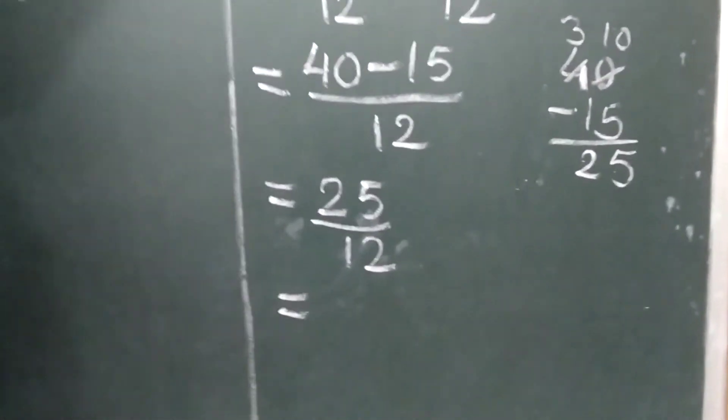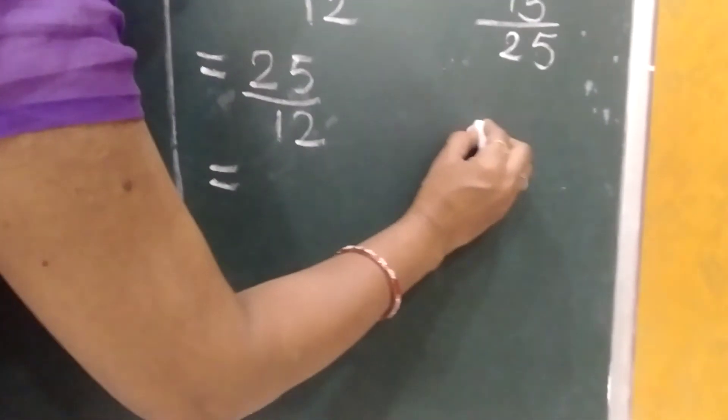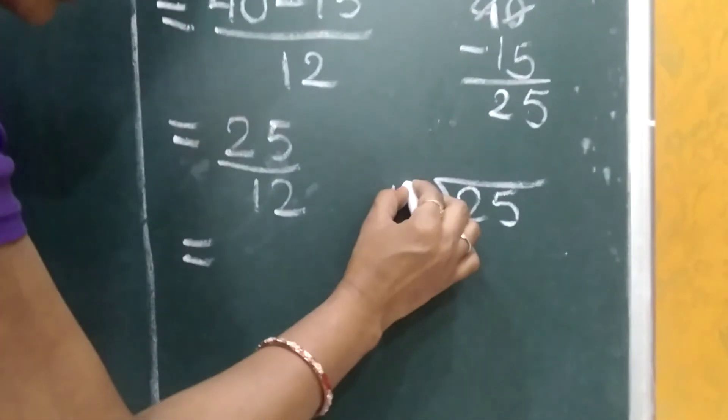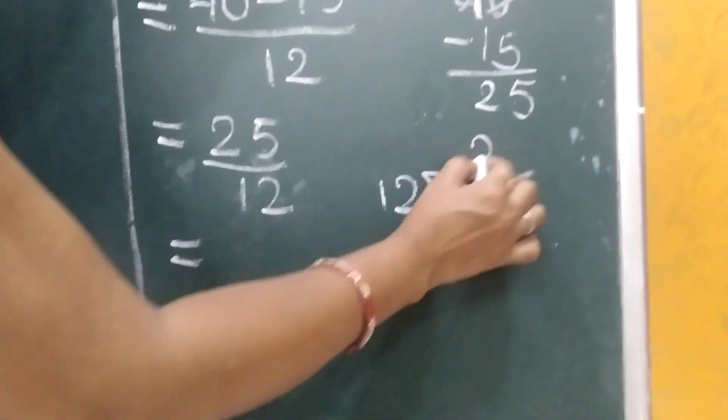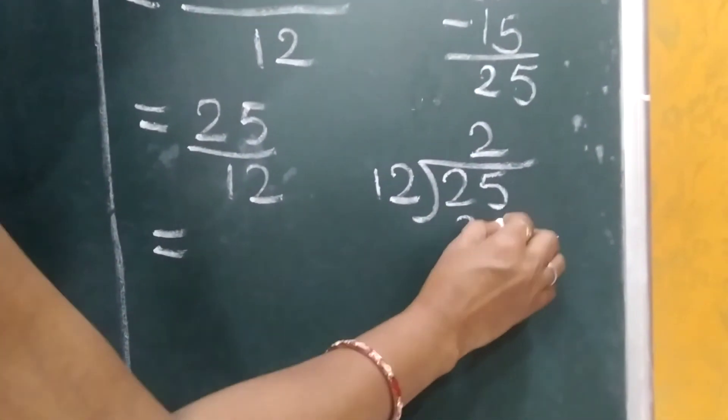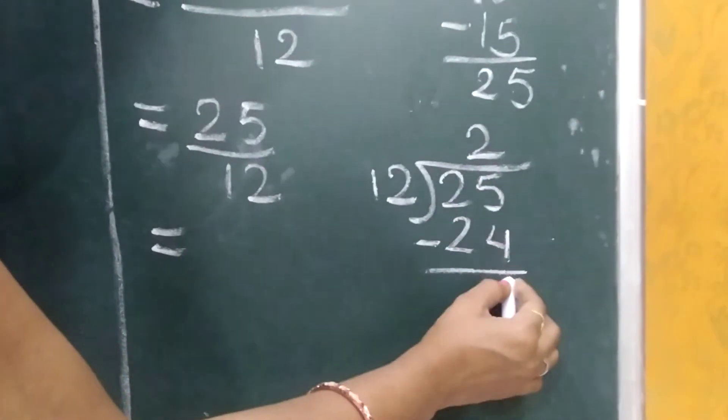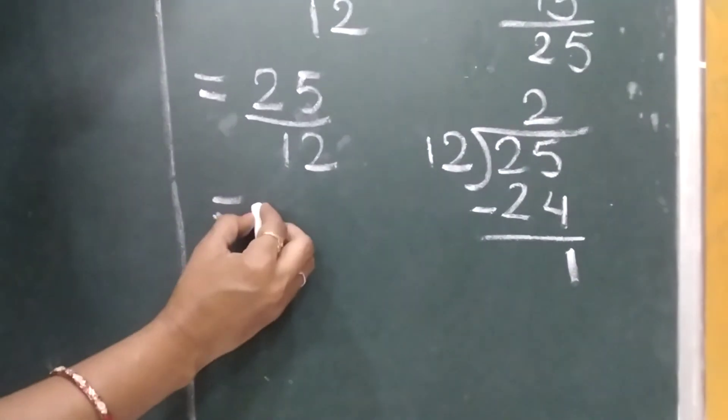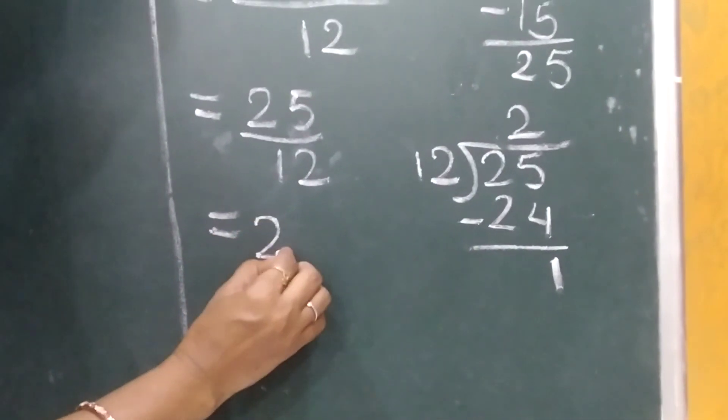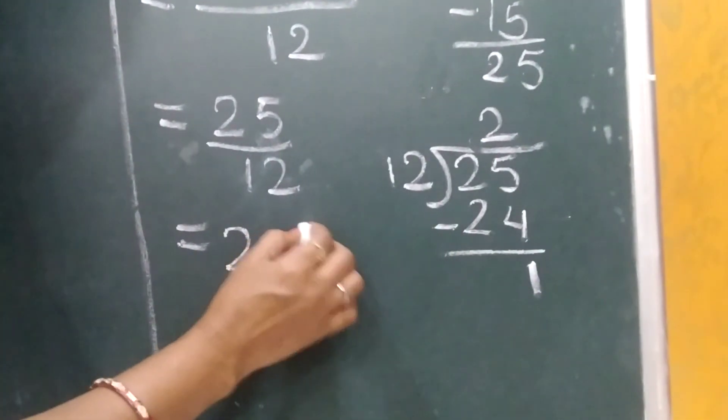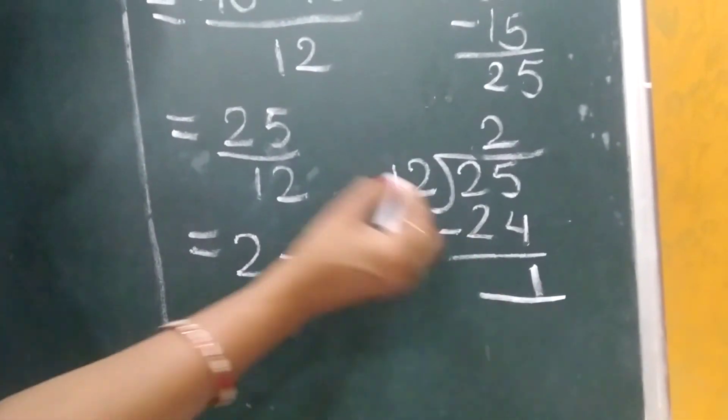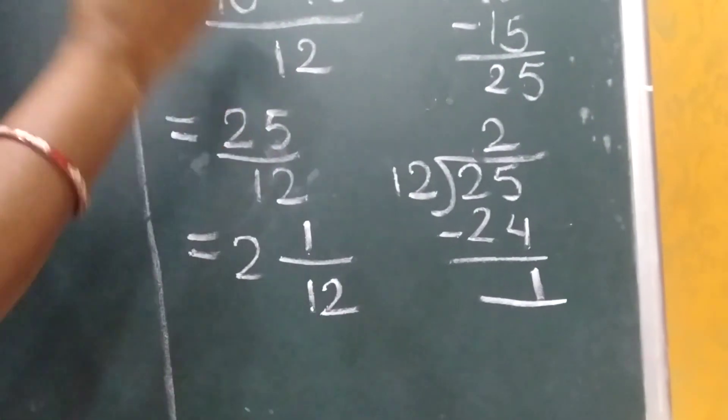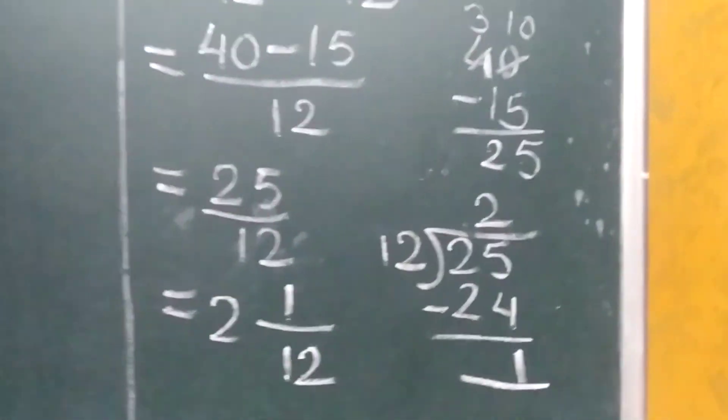And we have to convert this into mixed number. For this we will divide the numerator 25 by the denominator 12. So 12 twos are 24, we get the remainder 1. So our answer is, whole number is the quotient which is 2, numerator is the remainder which is 1, and this divisor is 12. So the answer is 2 and 1 upon 12.